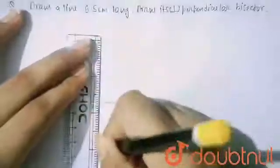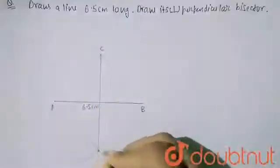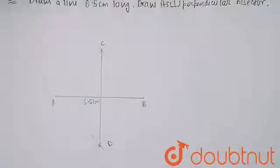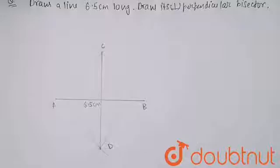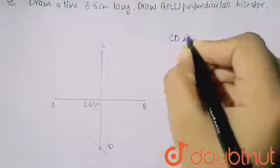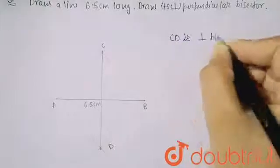Now you have to join this point. So here it will be joined like this and name it C, and this point is D. So here CD, this will be my perpendicular bisector of AB. So here I can write also that CD is perpendicular bisector of AB.